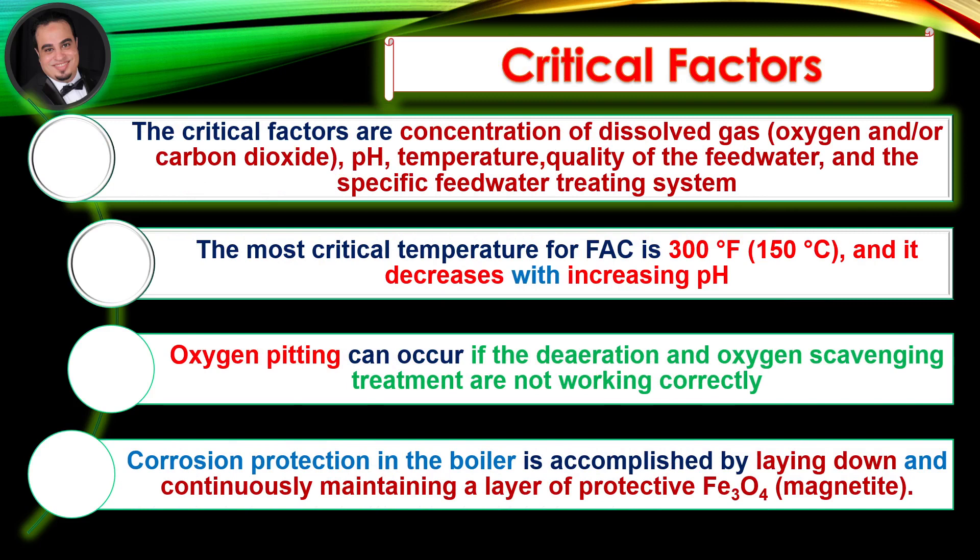Critical factors. The critical factors are concentration of dissolved gas — oxygen and/or carbon dioxide — pH, temperature, quality of the feed water, and the specific feed water treating system. The most critical temperature for flow accelerated corrosion is 300 degrees Fahrenheit, and it decreases with increasing pH. Oxygen pitting can occur if the de-aeration and oxygen scavenging treatment are not working correctly.